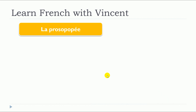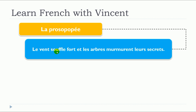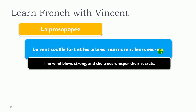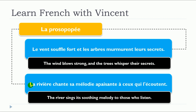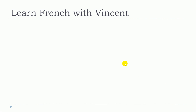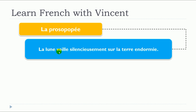Let's see some examples with la prosopopée. Le vent souffle fort et les arbres murmurent leurs secrets. La rivière chante sa mélodie apaisante à ceux qui l'écoutent. La lune veille silencieusement sur la terre endormie.